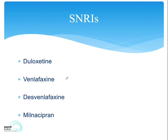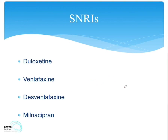Venlafaxine is a dual agent. At doses of 150 or less, it predominantly has a serotonergic effect. Whilst at doses of 225 and above, it tends to act predominantly as a noradrenergic and dopaminergic agent. That's why recommendations are that at doses of 225 and above, one should monitor blood pressure, as increased noradrenaline and dopamine can be activating.